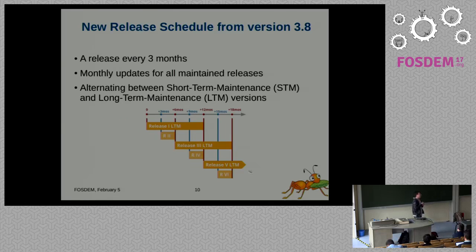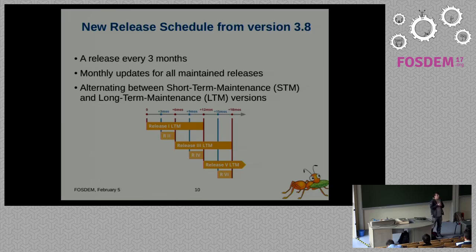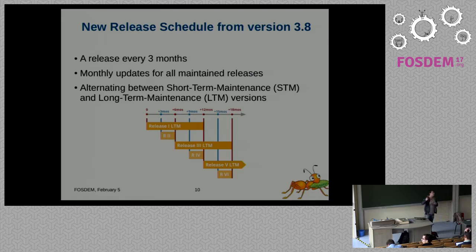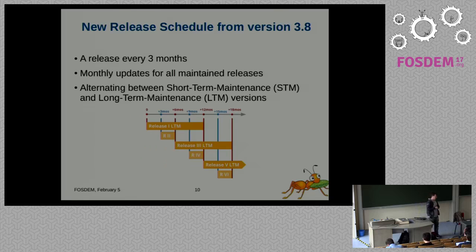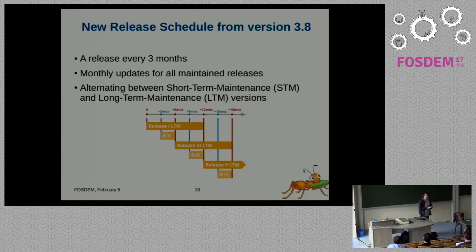3.8 is the first official long-term maintenance release that we have. Three months later 3.9 gets out. 3.9 is a short-term maintenance release - it is supported for three months until the next release gets out. So with the release of 3.10, 3.9 gets deprecated. 3.8 is a long-term maintenance release so it will still be supported and get bug fix updates. 3.10 had a release candidate tagged last week and is planned to be released in the coming weeks.